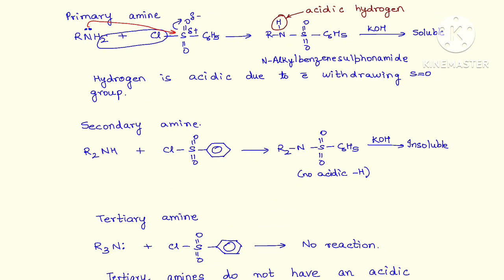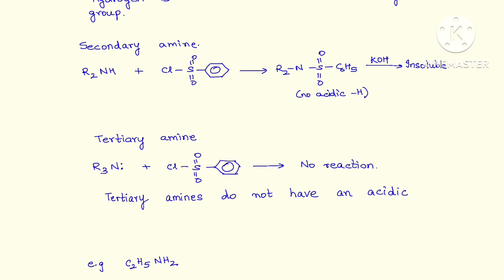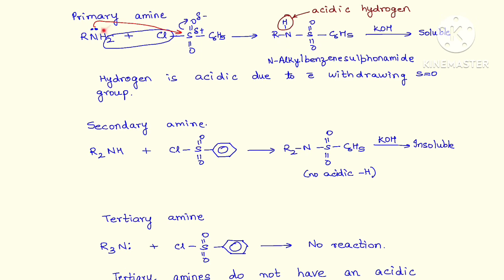Yes, of course, we've got the electron withdrawing sulfonyl group. We are not going into the details of the movement of the electrons because it will make it more confusing. Ultimately, what is happening is the hydrogen from the NH2 group and the Cl are getting released as HCl, and we have the product formed.